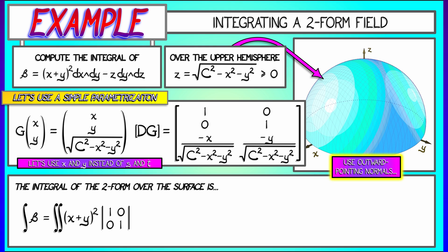For the next term, I have to take minus z, but z is root c squared minus x squared minus y squared. Then I need to take that basis two-form dy wedge dz and convert that into a determinant. What do I take the determinant of? It's the two-by-two matrix where the first row is given by the dy terms, 0 and 1. The second row is given by the dz terms in the derivative of g. That's minus x over root c squared minus x squared minus y squared, and minus y over root c squared minus x squared minus y squared.